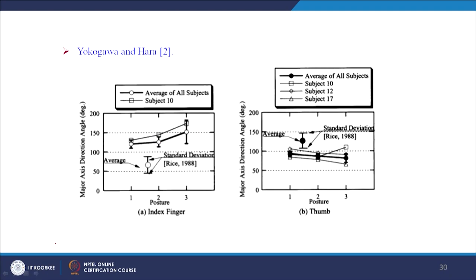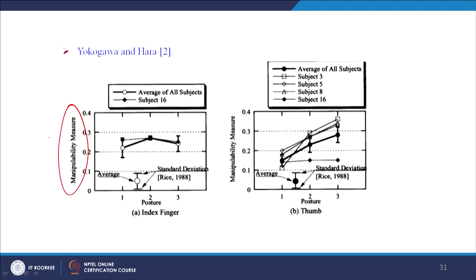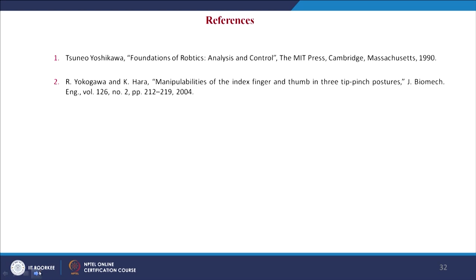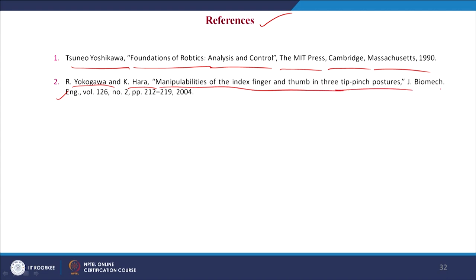The major axis direction angle and the manipulability measure both showed greater change for the index finger compared to the thumb. However, some variation existed among the 20 subjects. The references for this lecture are: Yoshikawa's Foundations of Robotics: Analysis and Control (MIT Press, 1990), and Yokogawa & Hara's paper on manipulability of the index finger and thumb in 3 tip-pinch portions, published in the Journal of Biomechanical Engineering.